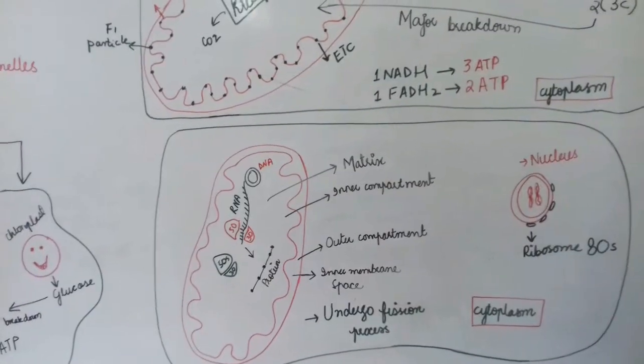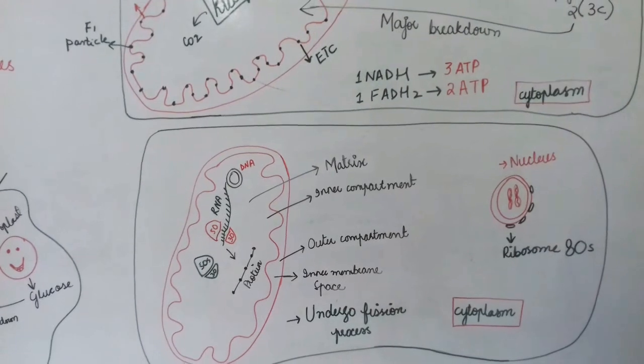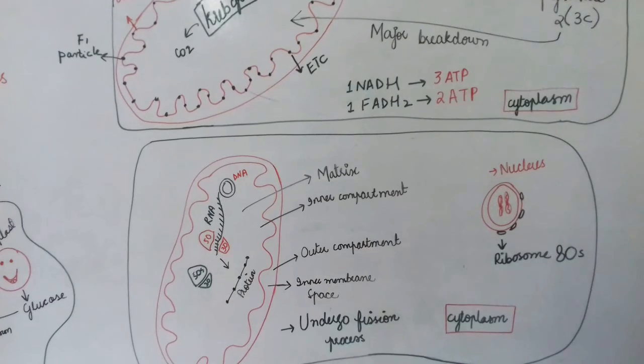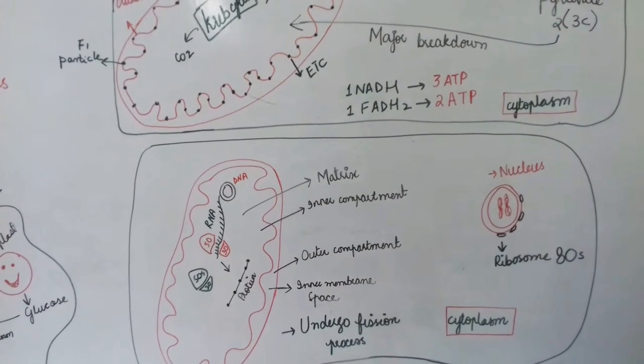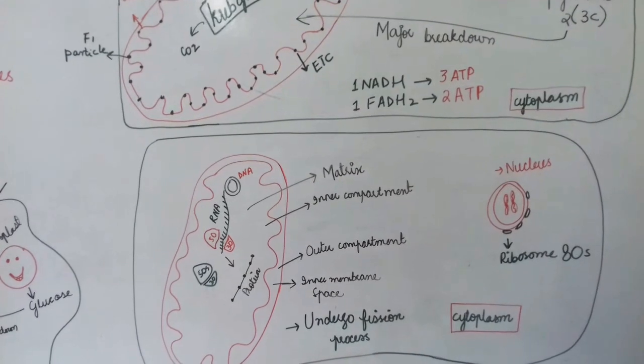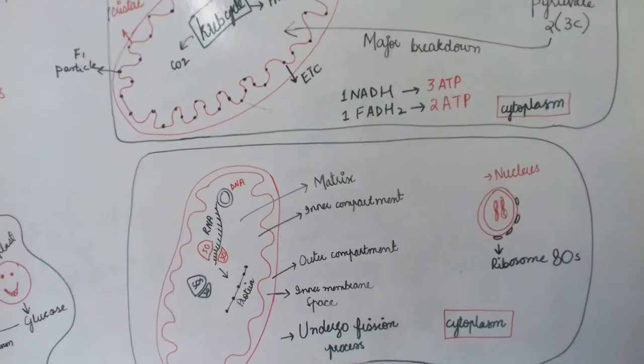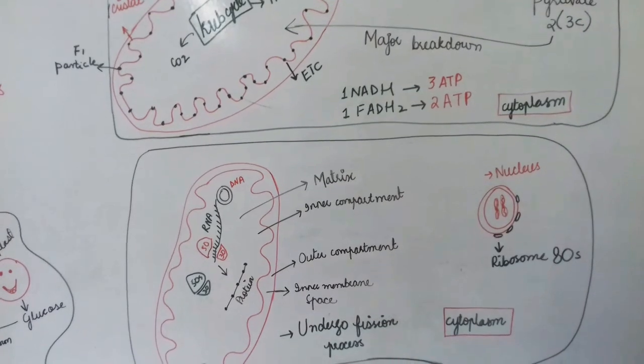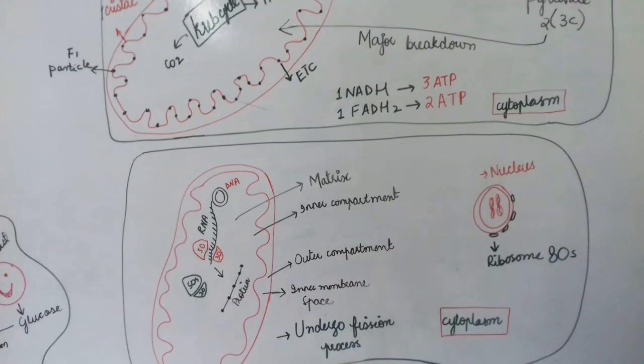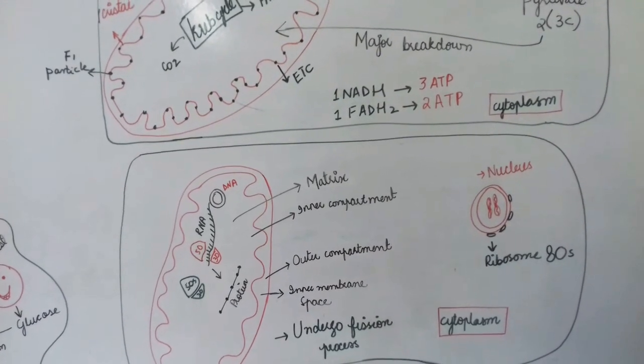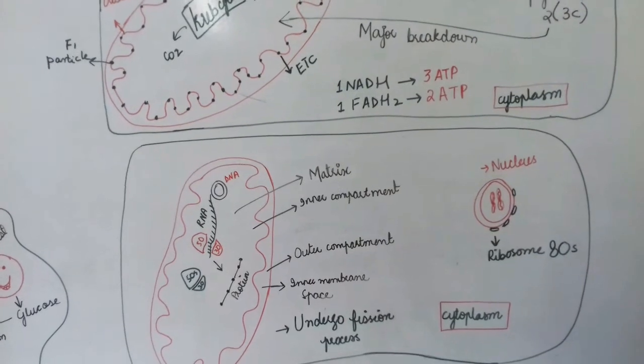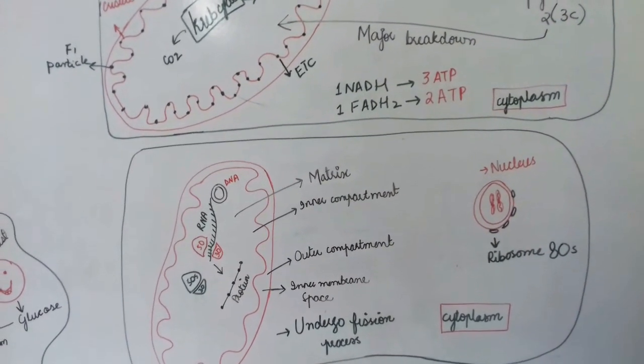When we come to mitochondria, it is eukaryotic-like because it has single-celled DNA. From that DNA, RNA synthesis occurs, and from RNA, translation starts directly—a prokaryotic process. The ribosomes that attach to RNA for protein formation are 70S, which is characteristic of prokaryotic cells.